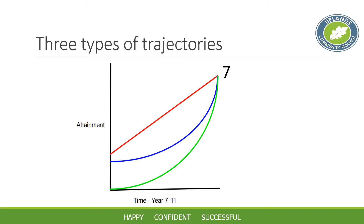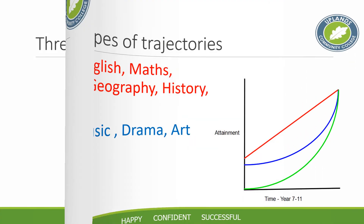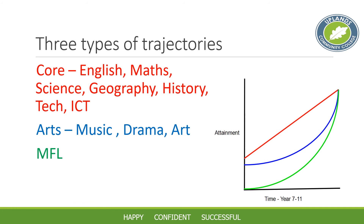Of course no students are completely average — this is very much an indication of what an average student might achieve. Normal students wouldn't have a perfectly smooth profile; they'd make excellent progress in some years and slightly slower in others, and might have periods of illness. But this gives us a broad brushstroke idea of what good progress looks like — not intended as a ceiling or to be completely unachievable, just a starting point for conversations about progress. The subjects listed on the slower trajectories — MFL, art, music, drama — have lower Key Stage 3 targets for the reasons just set out.